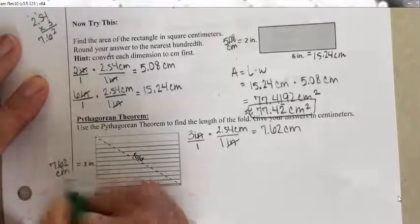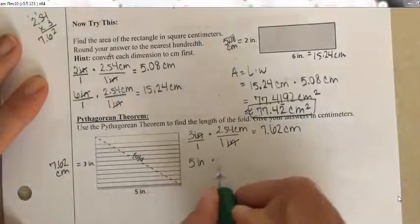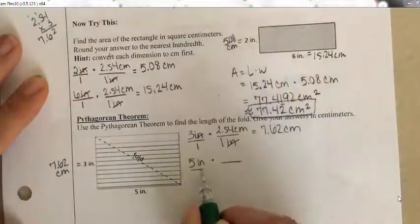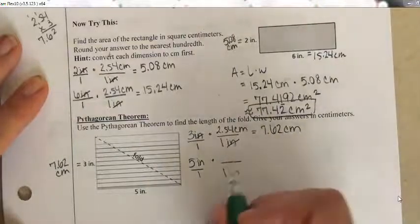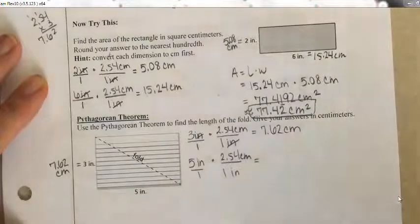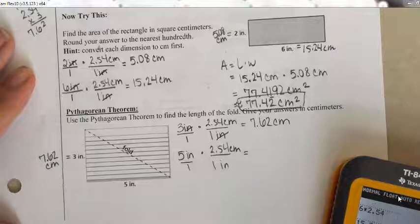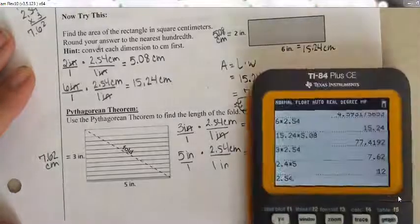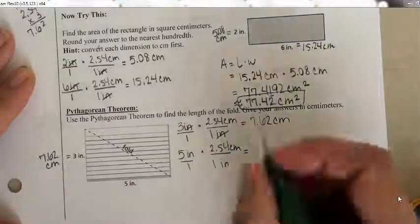Then I'll do the same thing with 5 inches. I want to get rid of the inches, so I put inches in the denominator with the equivalent amount of centimeters in the numerator: 5 inches times 2.54 centimeters per 1 inch. Multiplying on my calculator gives 12.7 centimeters.